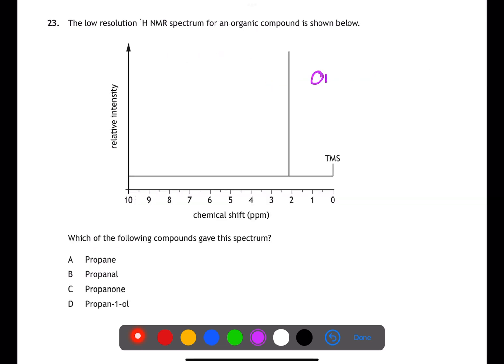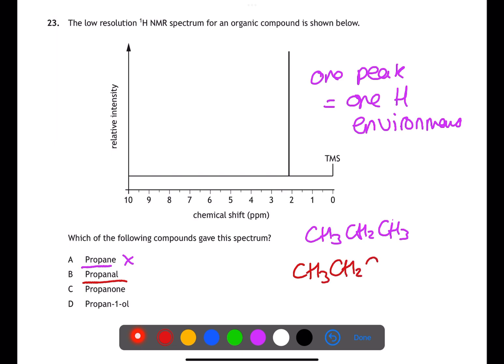Question 23 is looking at an NMR spectrum. There is only one peak in the NMR spectrum, which means there must only be one hydrogen environment. For propane we have CH3, CH2 and CH3. This is a symmetrical molecule, but we will have two hydrogen environments. For propanal we have CH3, CH2 and CHO. We will have three hydrogen environments. For propanone we have CH3, CO and CH3. This is symmetrical and both hydrogen environments will be the same. For propanol we have CH3, CH2, CH2OH. We would have four hydrogen environments.